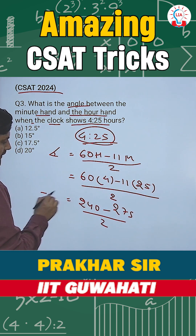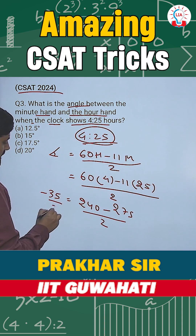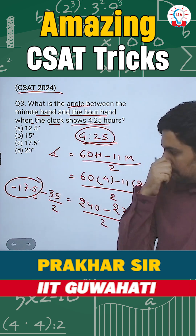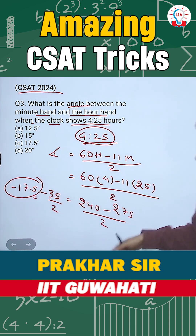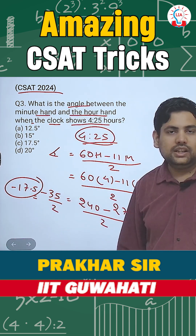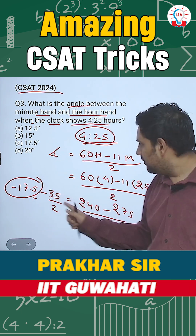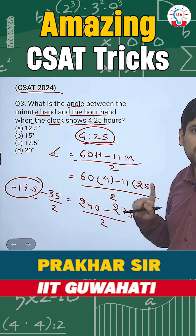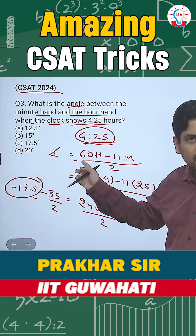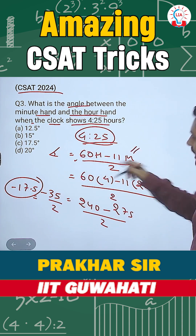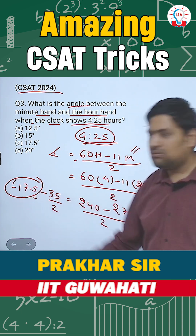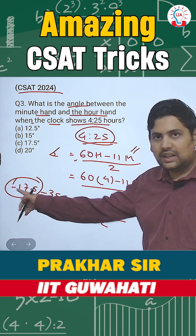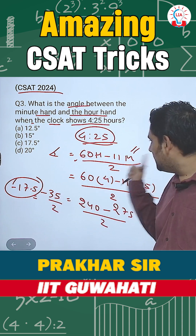So this will come out to be minus 35 by 2, or minus 17.5. But here you are getting a minus sign. Now, this minus does not mean anything — it simply means the angle is 17.5. When you write the formula like this, you have assumed that the hour hand is ahead of the minute hand. But when you calculate it for 4:25, actually the minute hand is ahead of the hour hand. That is why you are getting a minus sign. It does not mean that the angle becomes negative. Angles are always positive. This sign is just denoting that the minute hand is ahead of the hour hand.